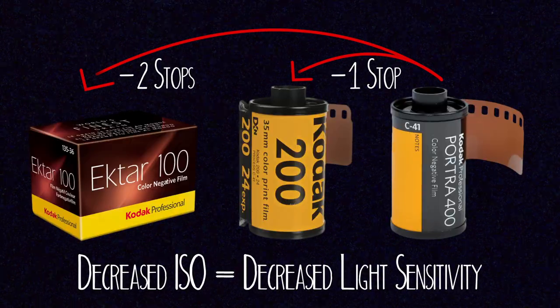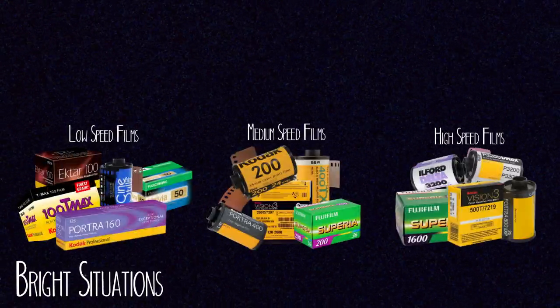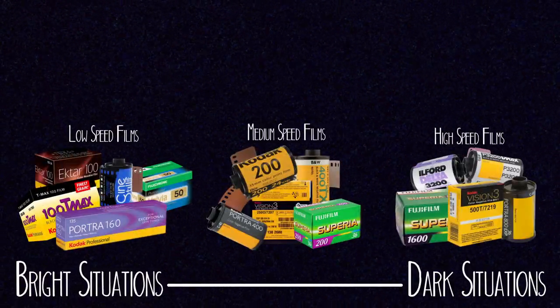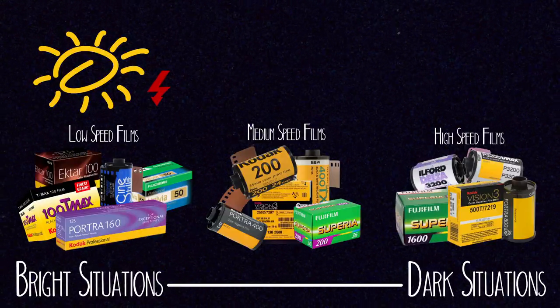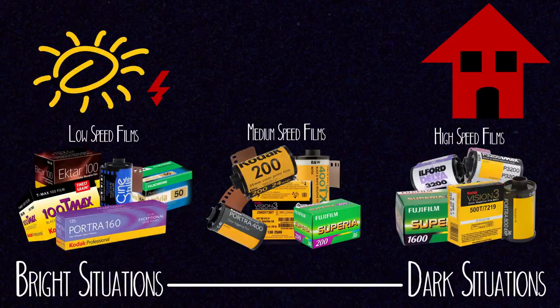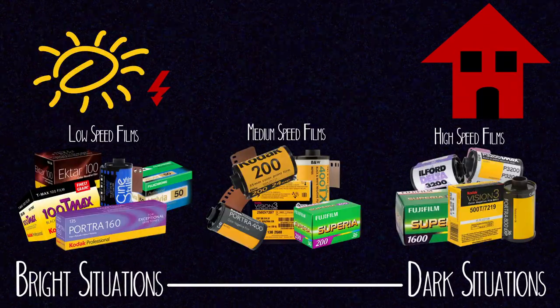When deciding what ISO film to buy, you really have to think about what kind of lighting situations you'll be in. A lower ISO is great for really bright sunny outdoor situations, and a higher ISO is great for more indoor and darker situations.